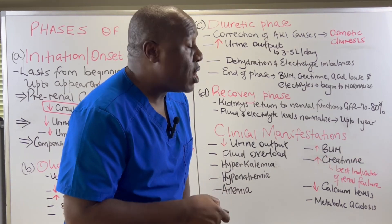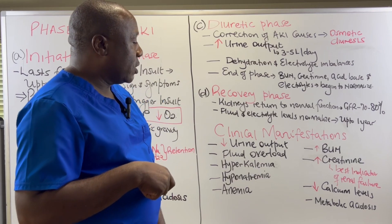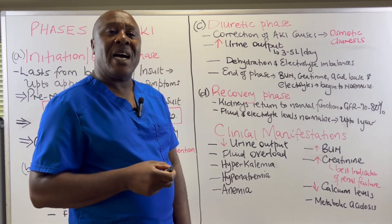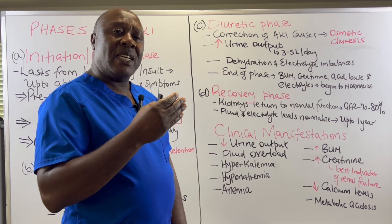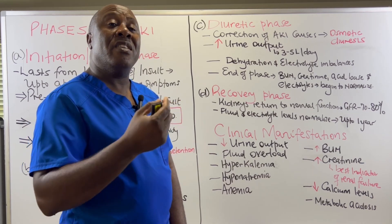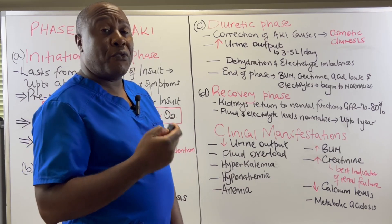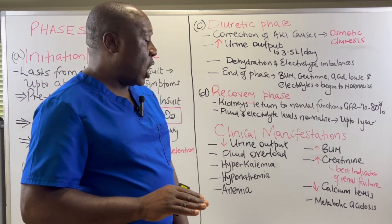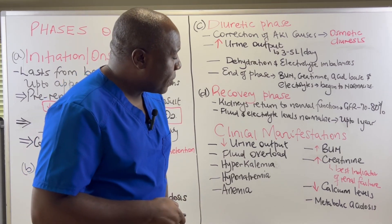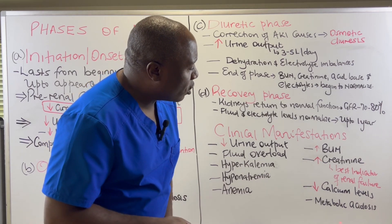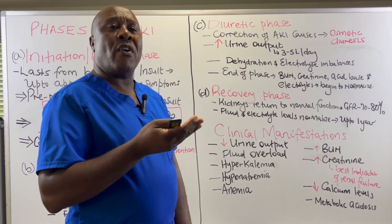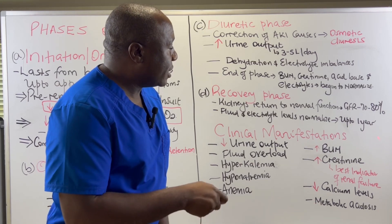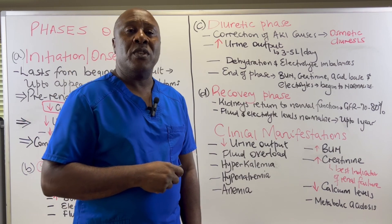Creatinine levels in our blood become elevated as a result of acute kidney injury. We also have decreased calcium levels — remember, kidneys activate vitamin D, and activated vitamin D helps us absorb calcium in the GI tract. When the kidneys are injured, vitamin D is not activated, and therefore calcium levels go down because the body is no longer absorbing calcium from the GI tract. Finally, we have metabolic acidosis — elevated levels of hydrogen ions and decreased levels of bicarbonate — resulting in metabolic acidosis. These are the clinical manifestations of acute kidney injury.